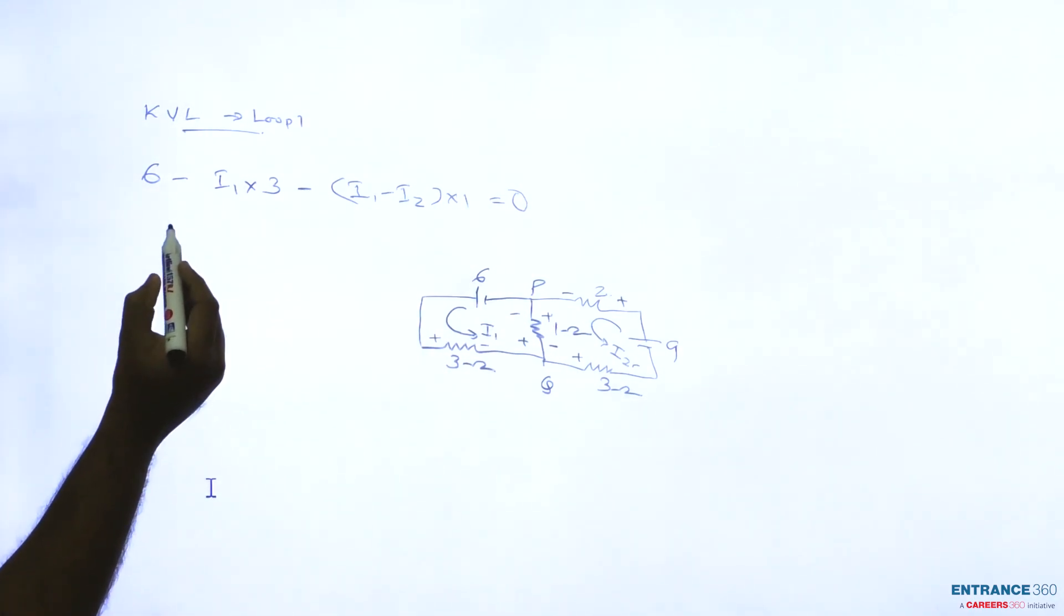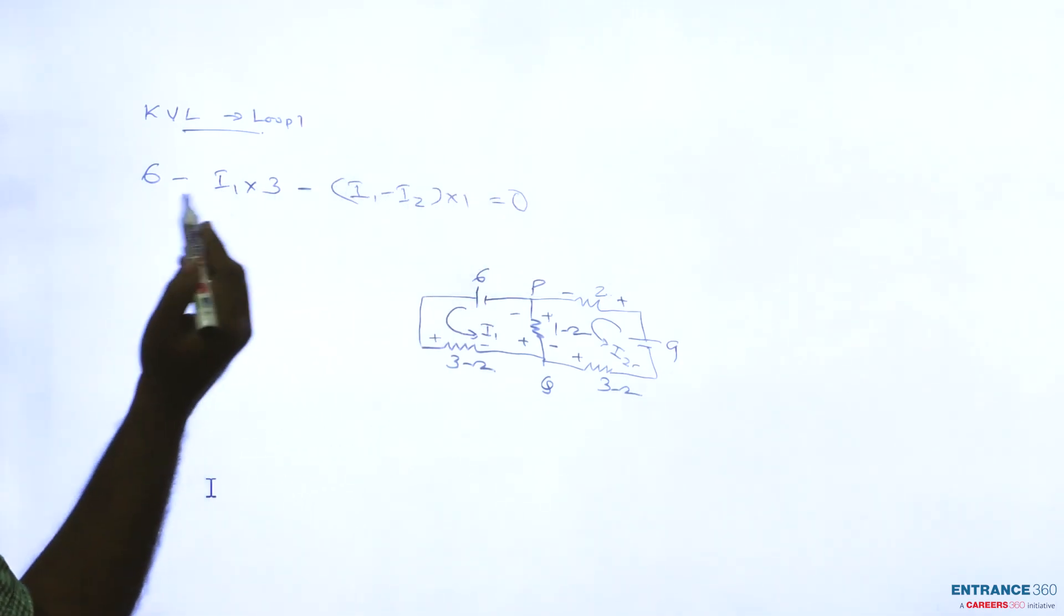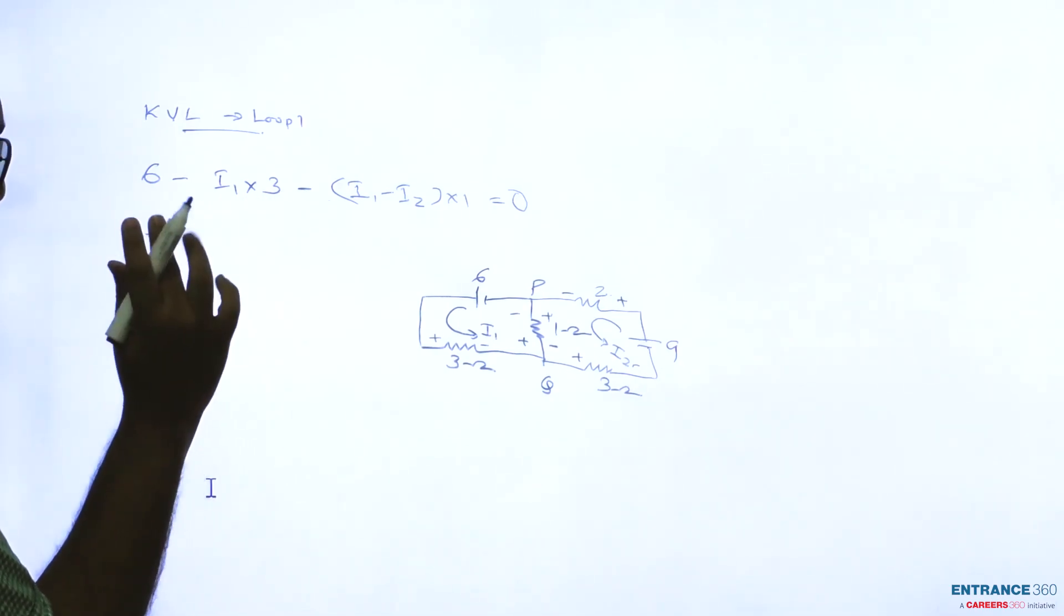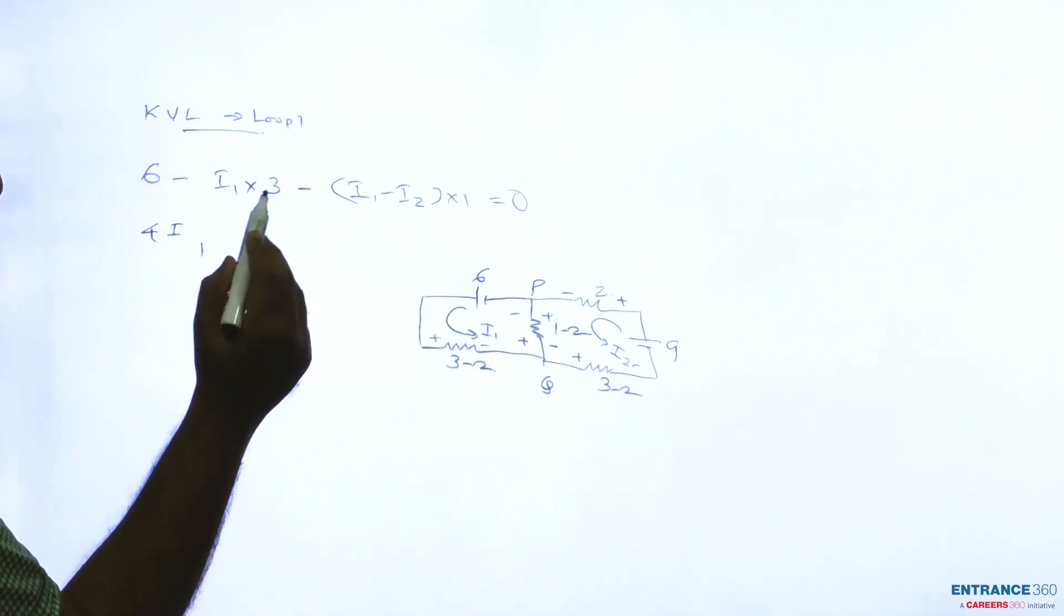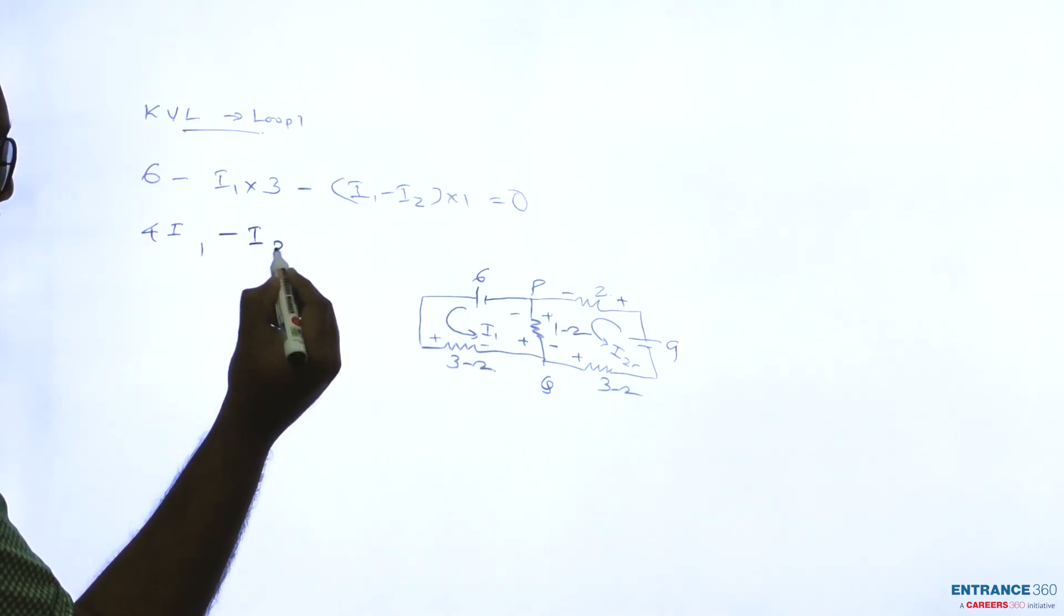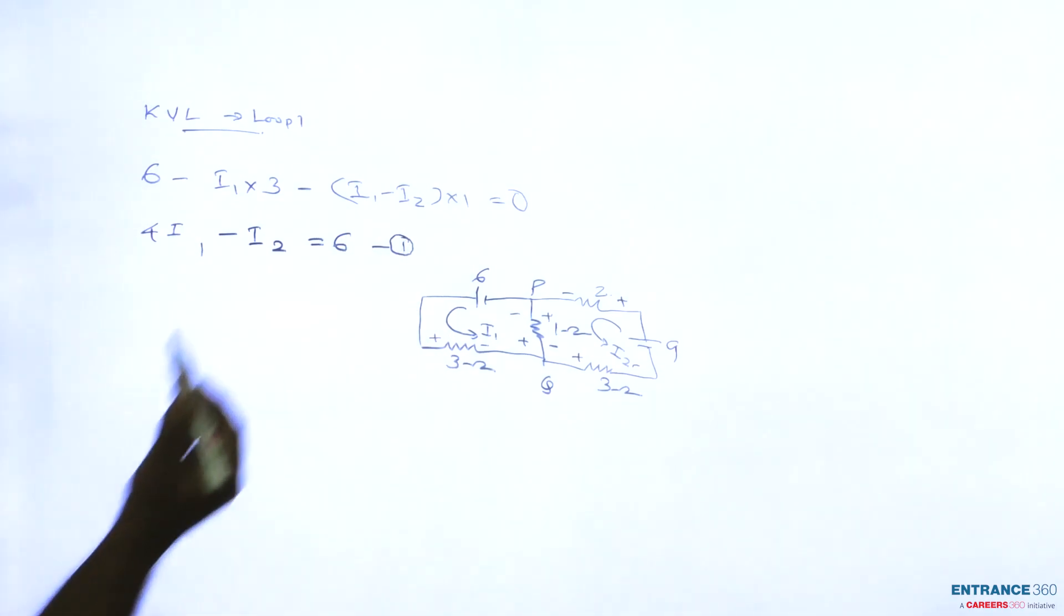Now simplifying this equation, if you take these terms right side we can write 4I1 minus I2 equal to 6. Say it is equation number 1.